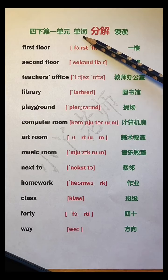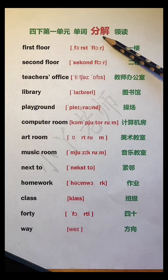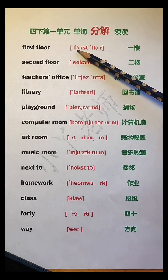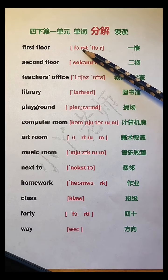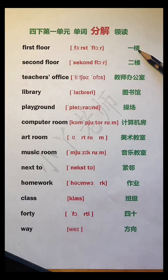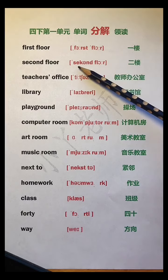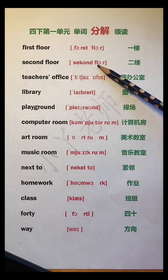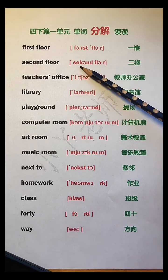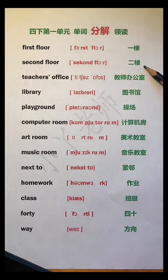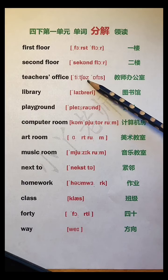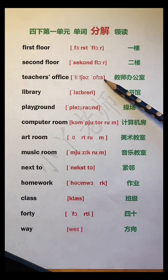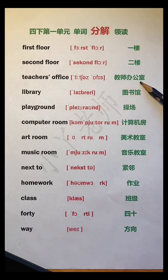四年级下册，第一单元单词分解领读。First floor, first floor，一楼。Second floor, second floor，二楼。Teacher's office, teacher's office，教师办公室。